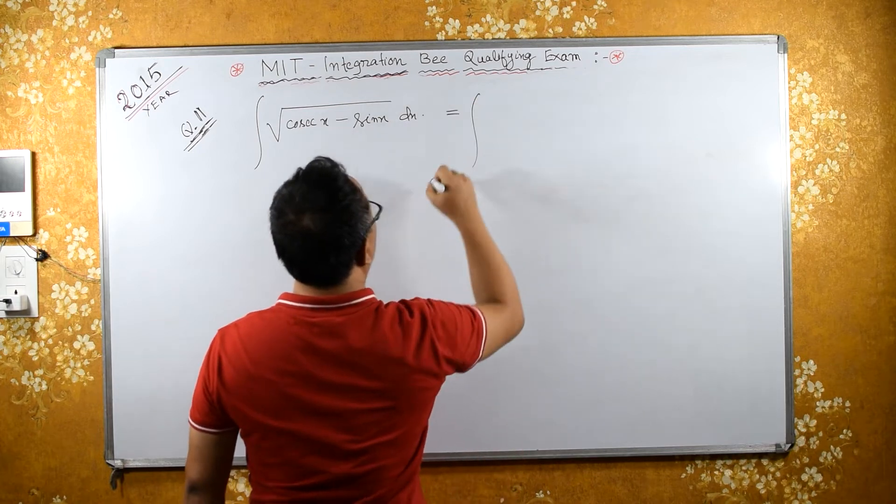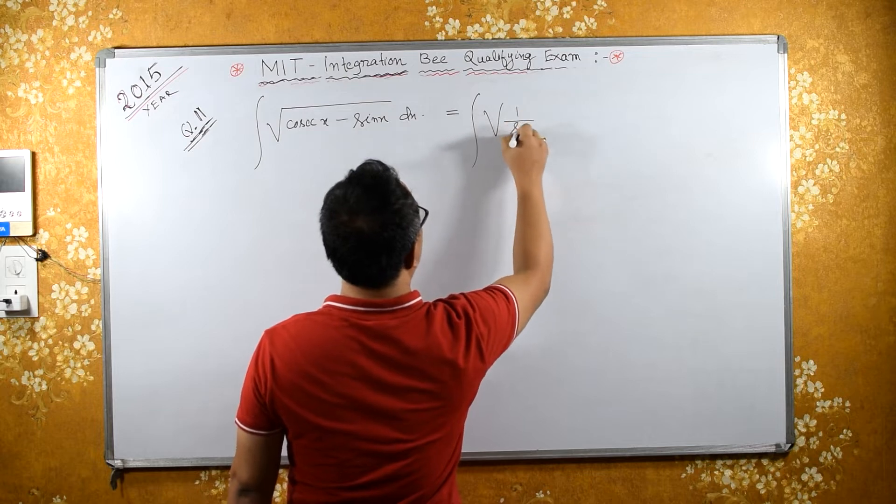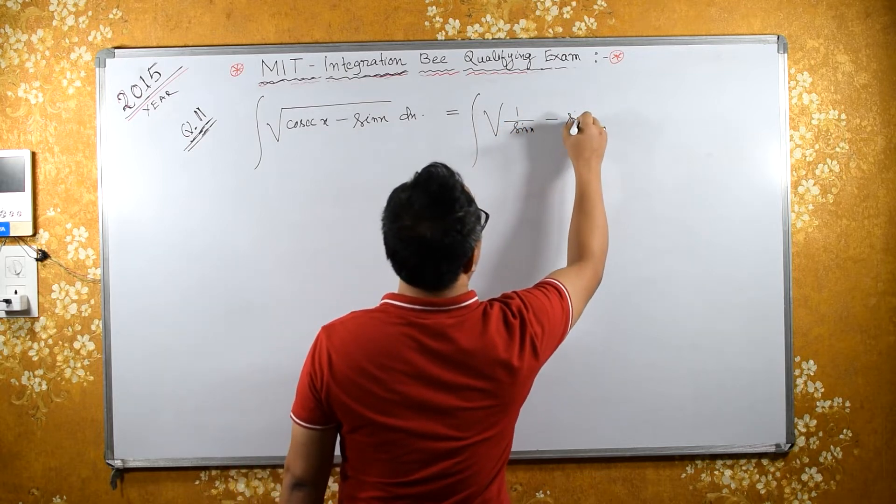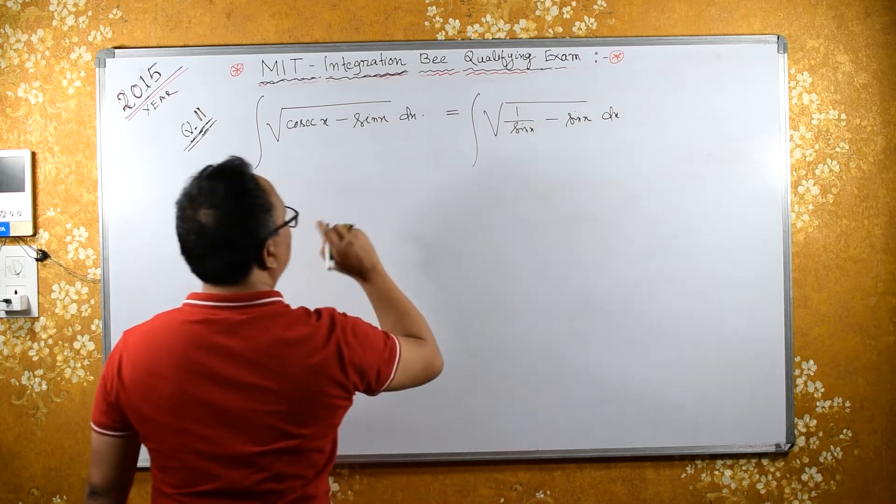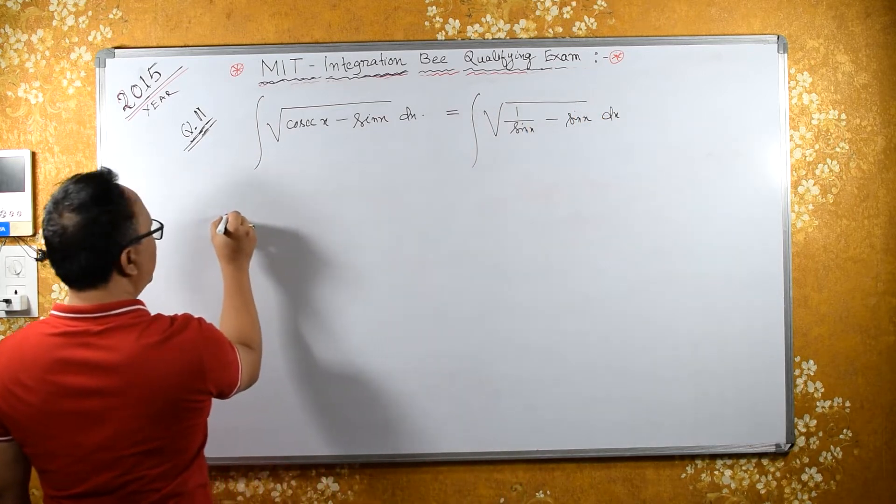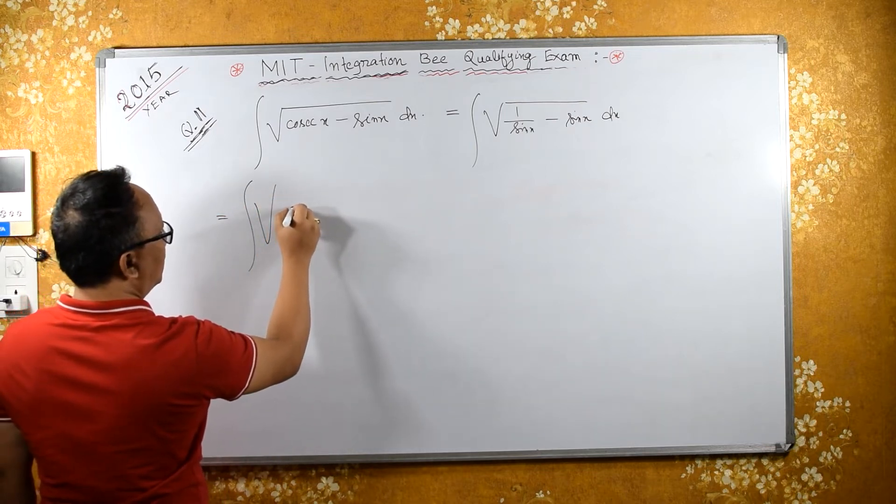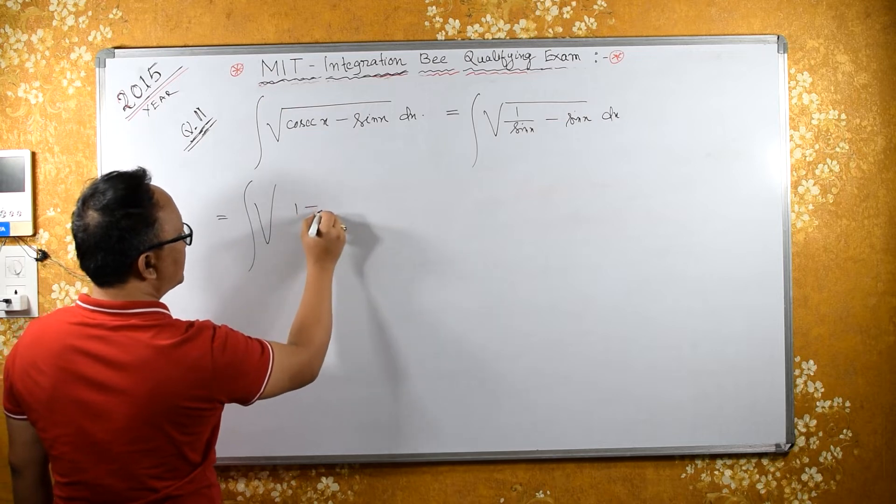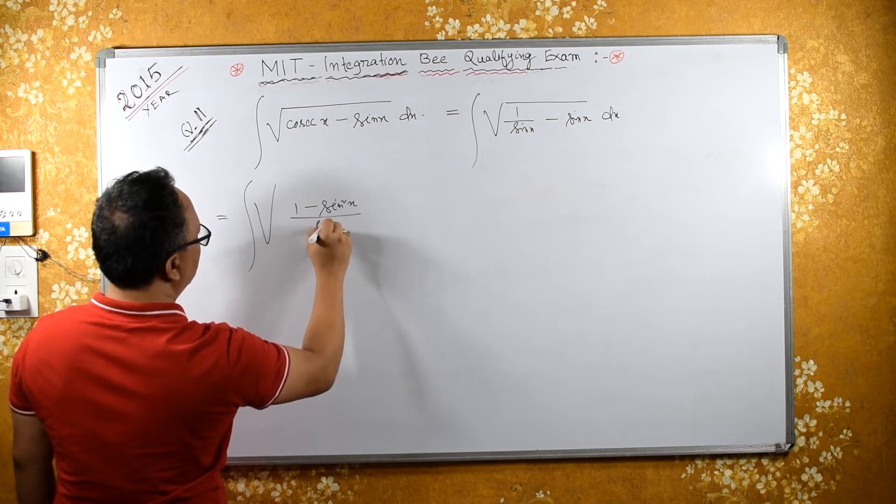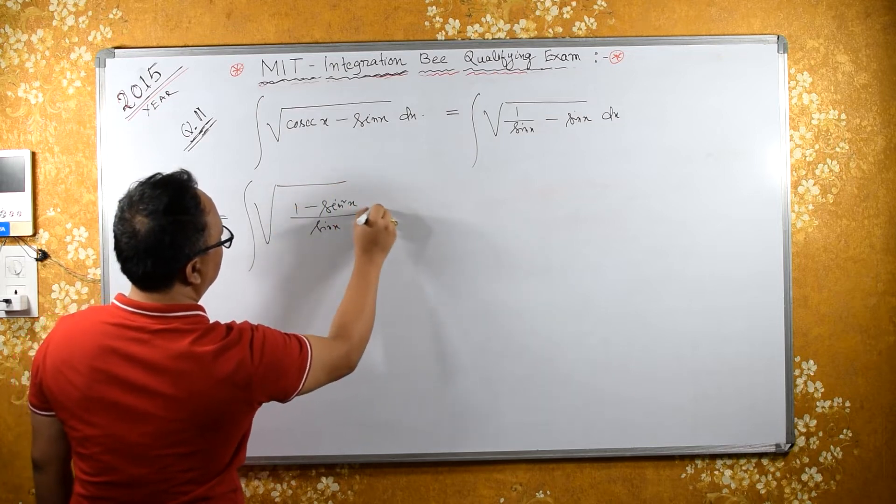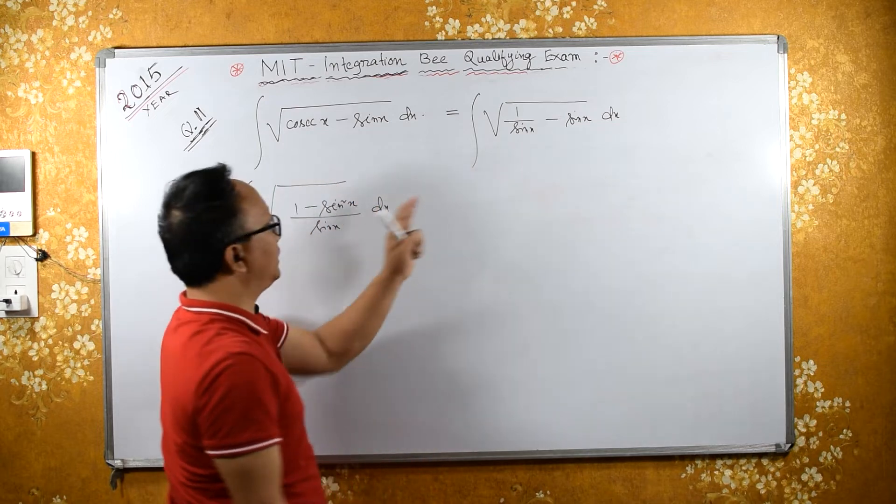This equals integral square root of 1 by sin x minus sin x dx. Taking LCM equals integral square root of 1 minus sin square x upon sin x. Sin square because sin times sin is sin square x.